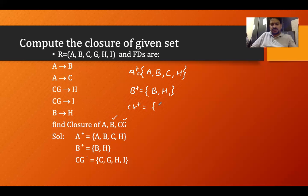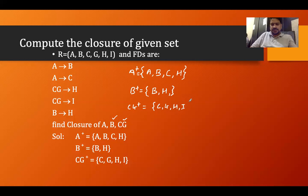Now find the closure of CG. CG comes in. C alone determines nothing, G alone determines nothing, but CG together determine H and I. H determines nothing, I determines nothing. So the closure of CG is {C, G, H, I}.